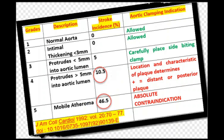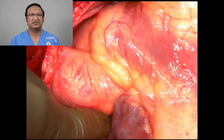Another classical paper by CATS et al. classifies intimal thickness into five grades. Grade 5 is more than 5 mm of intimal thickness with a mobile thrombus — if present in the ascending aorta, the risk of stroke is almost 47%, and it is an absolute contraindication for placing the side-biting clamp. Grade 4 (more than 5 mm thickness) in the arch, descending thoracic aorta, or posteriorly in the ascending aorta still allows proximal anastomosis with a side-biting clamp, but stroke risk is around 10.5%. For the other three grades there is hardly any stroke risk from cross-clamping. With this information, we will proceed to the next video on real-time construction of proximal anastomosis.